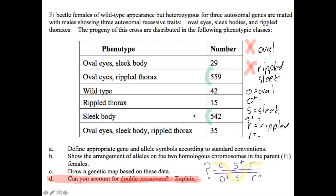So if we run our line through the top, the phenotypes that are possible from this are the triple mutant: oval, sleek, rippled. We see that that is one of the ones in the list — it's not one of the two that we're missing, so that can't be the order.